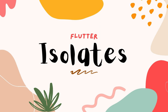An isolate is a thread that has an event loop that continuously processes events in its own memory space. Dart normally runs one isolate, but you can have more if you want. This can be used if you have a big operation that would cause performance issues or frame drops.